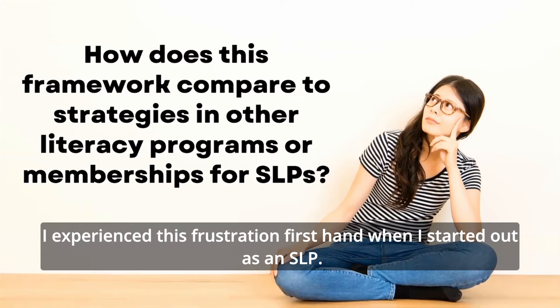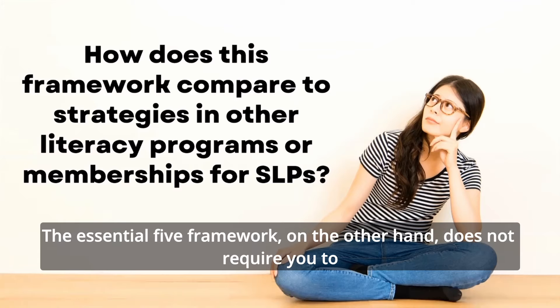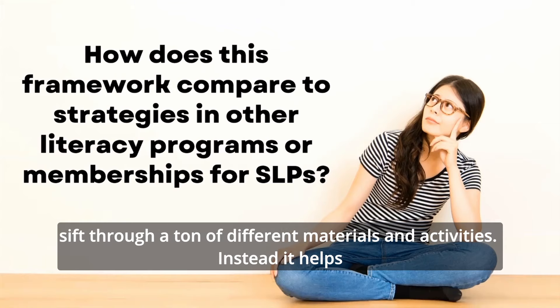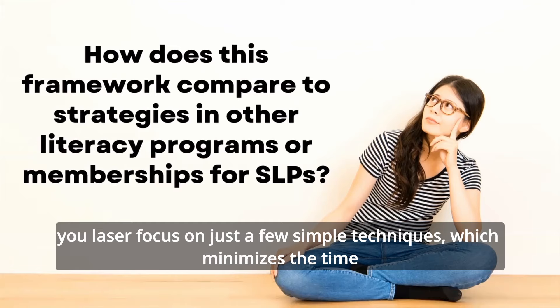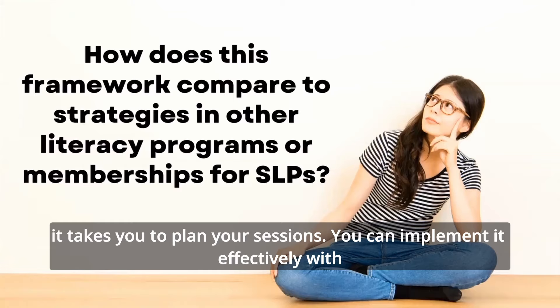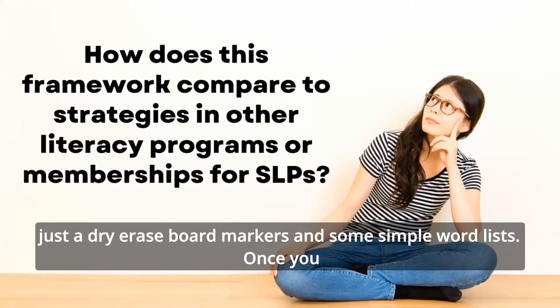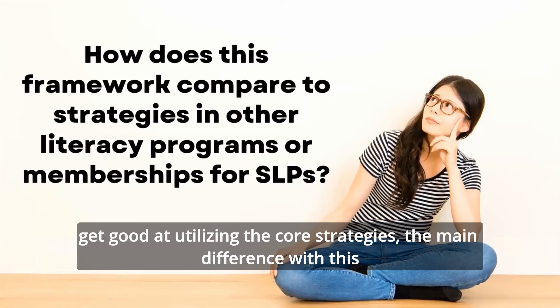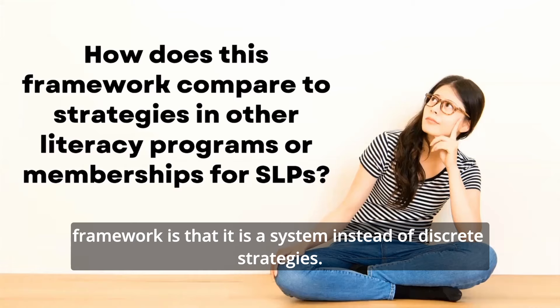I experienced this frustration firsthand when I started out as an SLP. The Essential 5 Framework, on the other hand, does not require you to sift through a ton of different materials and activities. Instead, it helps you laser focus on just a few simple techniques, which minimizes the time it takes to plan your sessions. You can implement it effectively with just a dry erase board, markers, and some simple word lists once you get good at utilizing the core strategies. The main difference is that it is a system instead of discrete strategies.